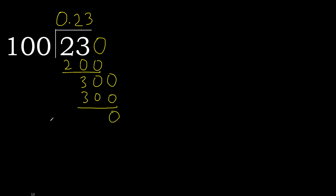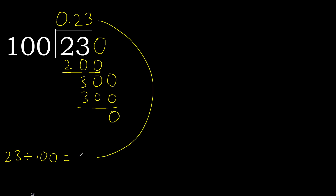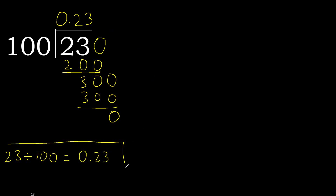Subtract: 0. Therefore finish. 23 divided by 100 is complete.